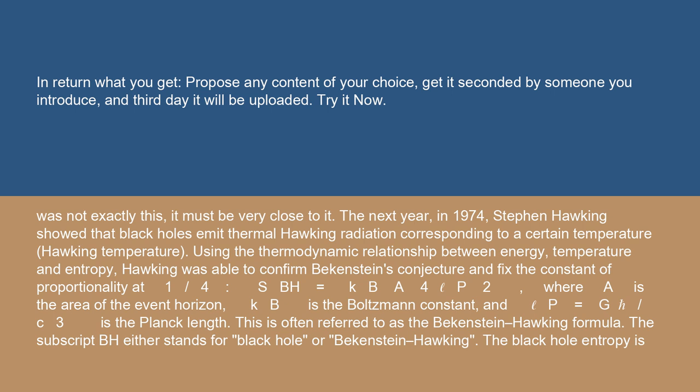S_BH equals k_B A / 4ℓ_P², where A is the area of the event horizon, k_B is the Boltzmann constant, and ℓ_P equals √(ℏG/c³) is the Planck length. This is often referred to as the Bekenstein-Hawking formula.